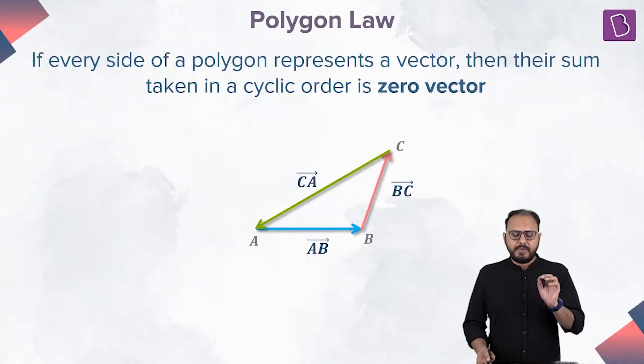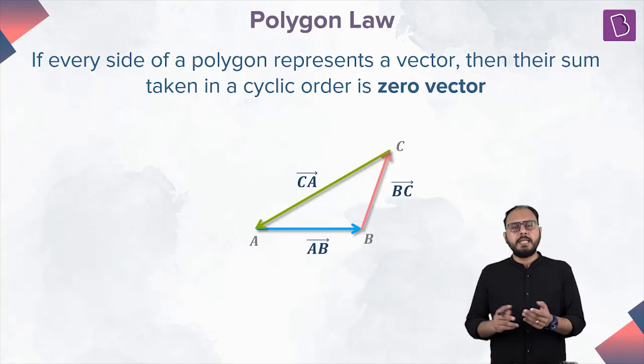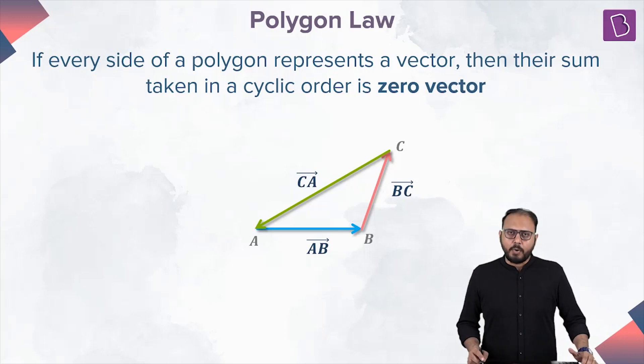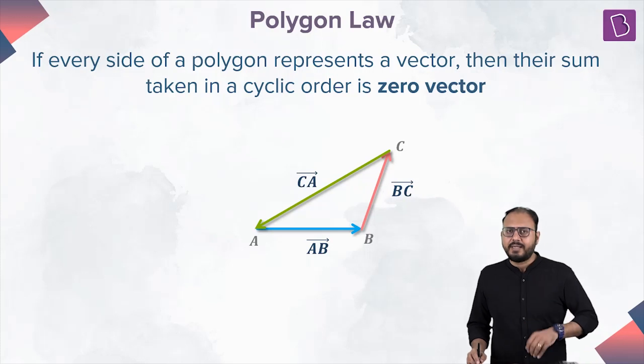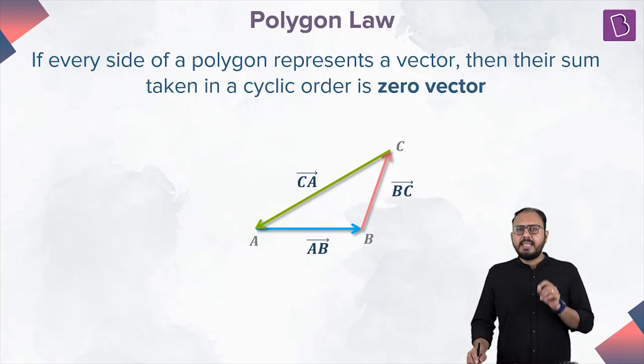Polygon law. If every side of a polygon represents a vector, which polygons? Any polygon. Which is the smallest polygon? Triangle. So I am starting with the triangle, but the law is valid for any number of sides. If every side of a polygon represents a vector, then their sum taken in a cyclic order is zero vector.